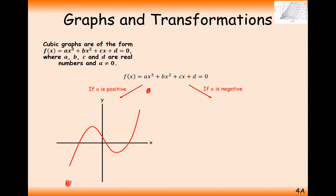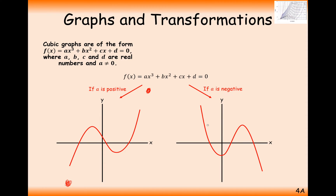Unless the term in front of the x-cubed is negative — a bit like it was for a minus x-squared graph. We flip it upside down, flipping it in the x-axis, so it starts in the top left and finishes in the bottom right.